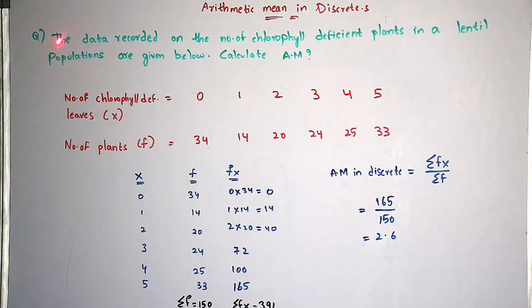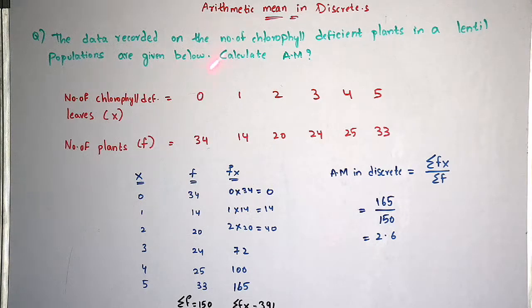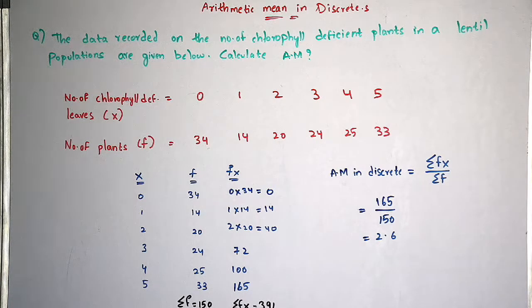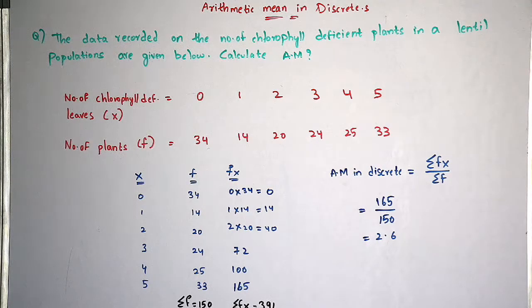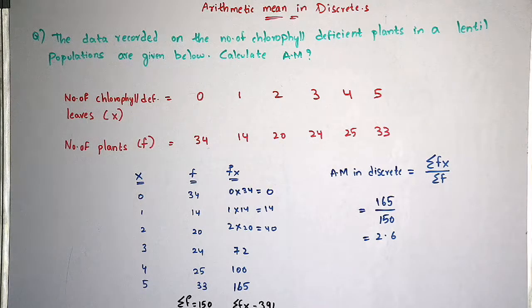Coming to the question: the data recorded on the number of chlorophyll deficient plants in a lentil population are given below — calculate arithmetic mean. As I said before, the question will not state discrete, individual, or continuous series; you yourself should identify it. If there is a presence of frequency, then you can identify that the question belongs to discrete series.